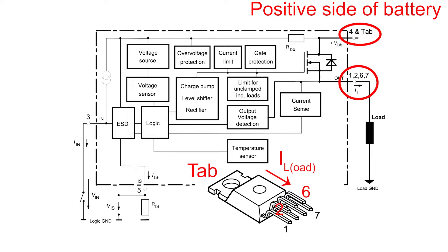The current flows out of the switch through pins 1, 2, 6, and 7 and continues to the load, which are the ESCs and motors in our case.